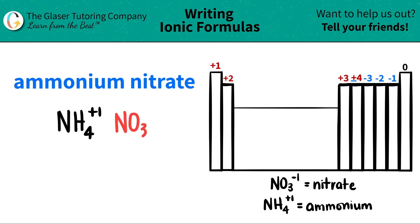Nitrate is NO3 with a −1 charge. Now we have both components and their charges, so we do the crisscross trick — we take the charges and crisscross them to determine how many of each we need. The +1 crisscrosses down telling me I only need one nitrate, and the −1 crisscrosses down telling me I need one ammonium.